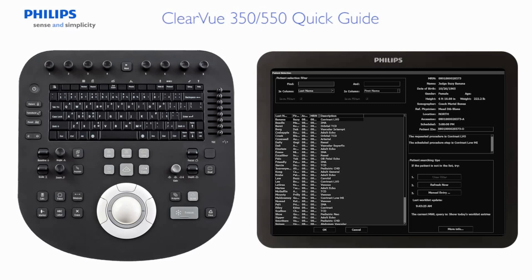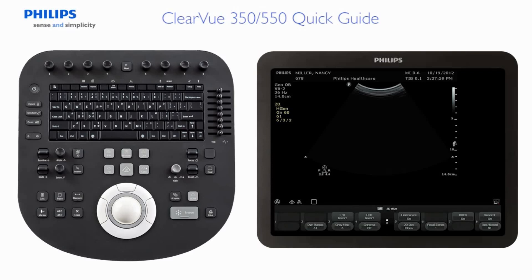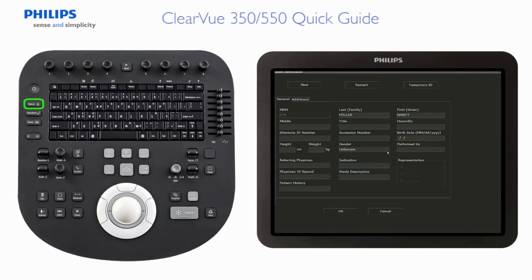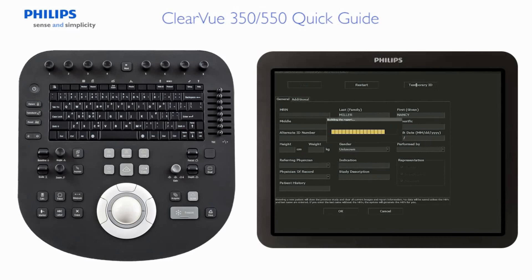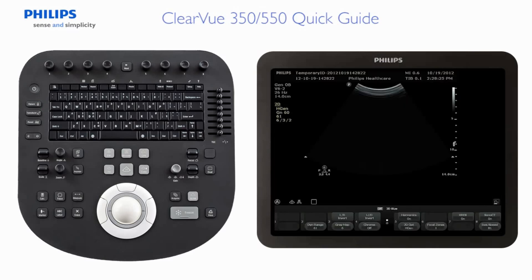Option 3: Temporary ID. If you need to proceed with the examination but you do not have the patient data information, use the Temporary ID option to begin a new exam. To select a temporary ID, press the Patient key and then click Temporary ID to begin imaging. Note: you may enter updated patient data within 24 hours to replace the temporary ID if the study has not been exported.